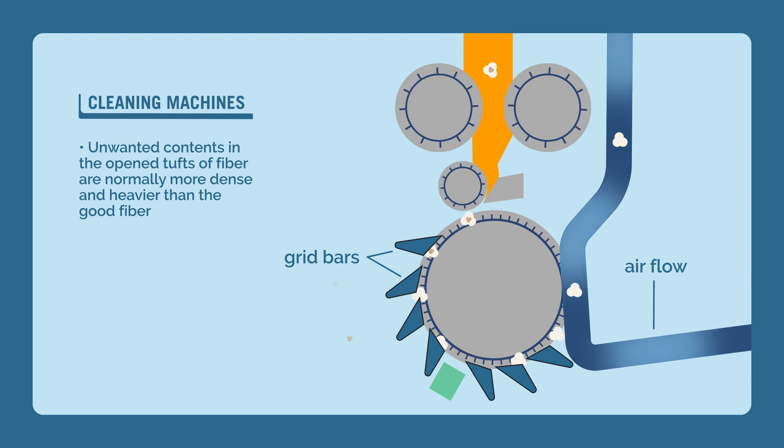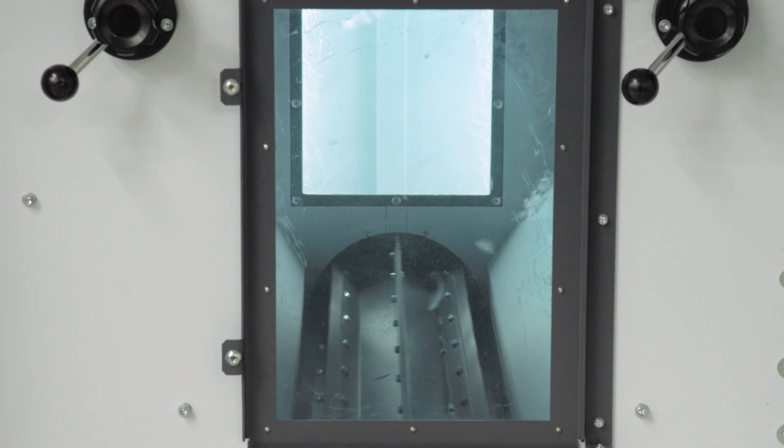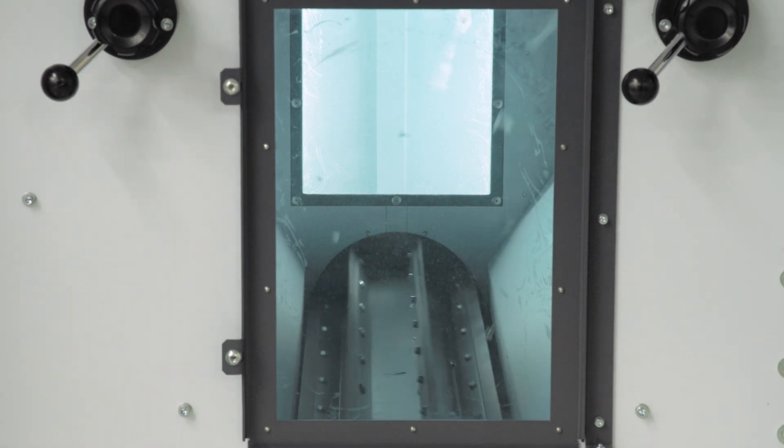The machine's designs use gravity, centrifugal force, and air flow combined with some type of beating action. Usually, grid bars may be found under the beaters in most cleaning machines.